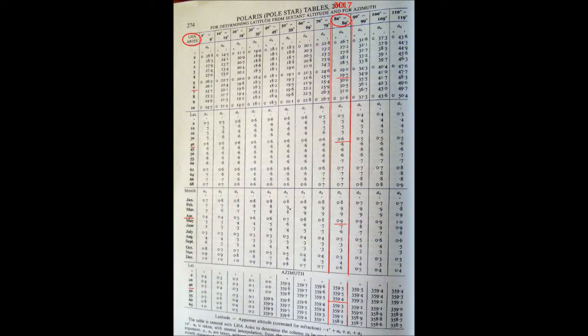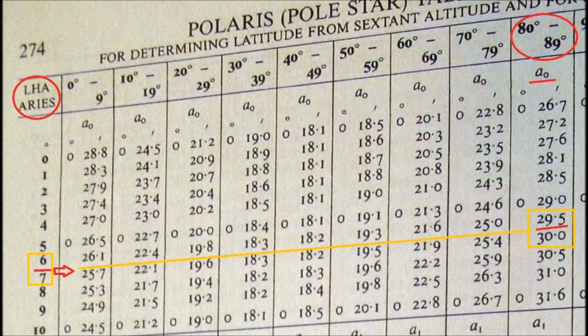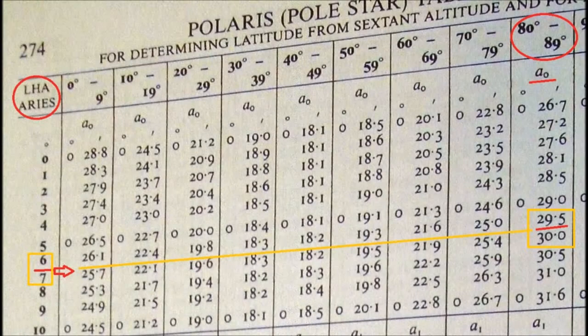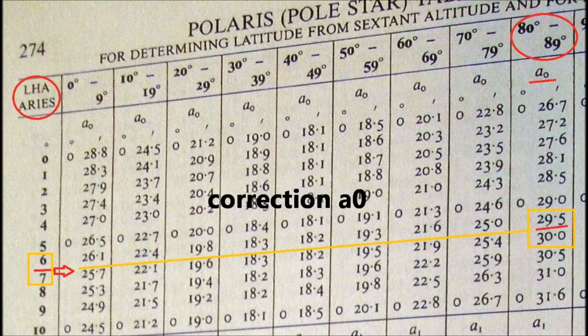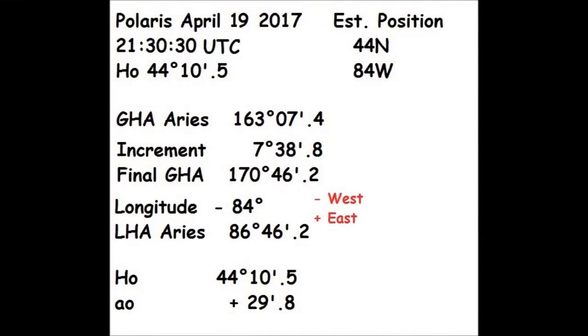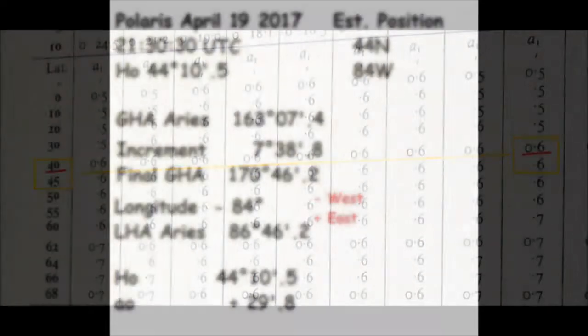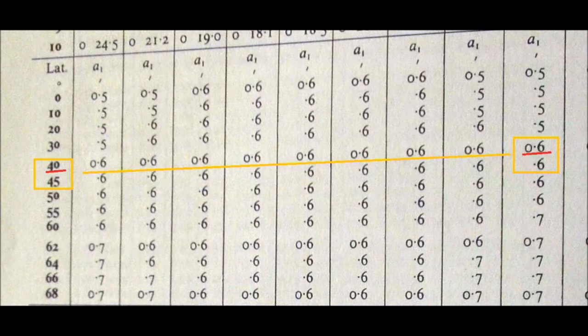We're going to use the LHA of Aries to do three corrections to HO. Our LHA is 86° 46 minutes, so we move to the right and find the column labeled 80 to 89 degrees. Move to the far left column underneath LHA Aries 0 to 10 degrees and pick a spot between 6 and 7, because our LHA is between 86 and 87 degrees. Follow that to the right to the 80–89 degree column, where we interpolate a correction of 29.8 minutes for A0.